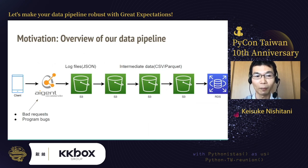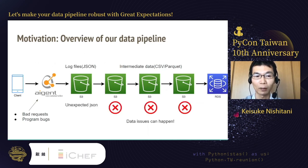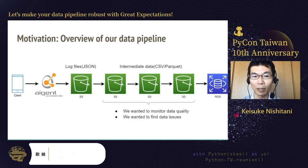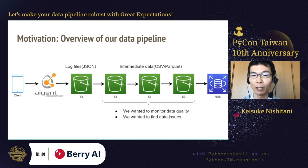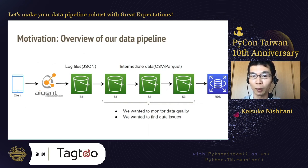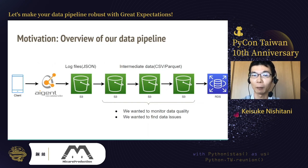Imagine if our recommendation service receives bot or malicious requests from our clients, or if some bugs are introduced by a program update. In this case, there is a possibility that some unexpected JSON is saved on S3, and it can cause data issues in our ETL pipeline. Sometimes we can catch the data issues because the ETL pipeline raises an error, but sometimes we can't find the issue because the pipeline processes the unexpected JSON without errors. So we wanted to monitor the data quality on S3 and find data issues as soon as possible. This is the reason why we decided to introduce Great Expectations.